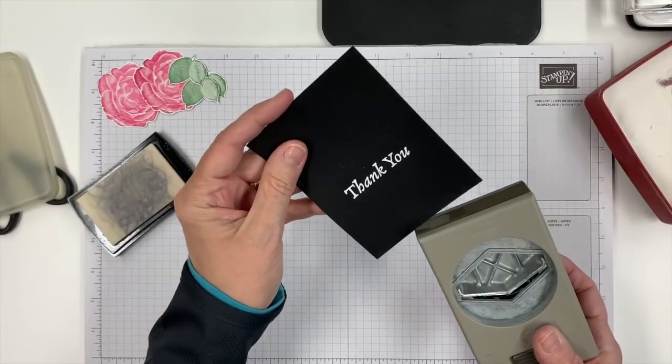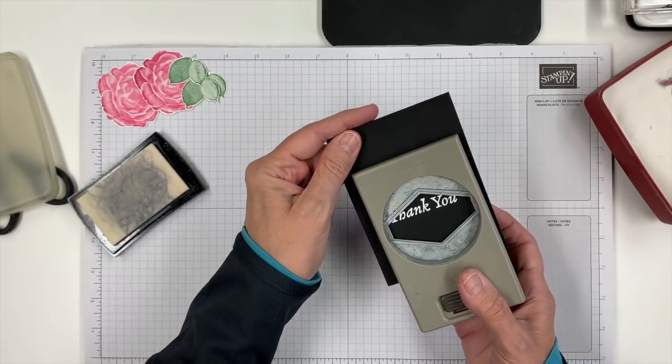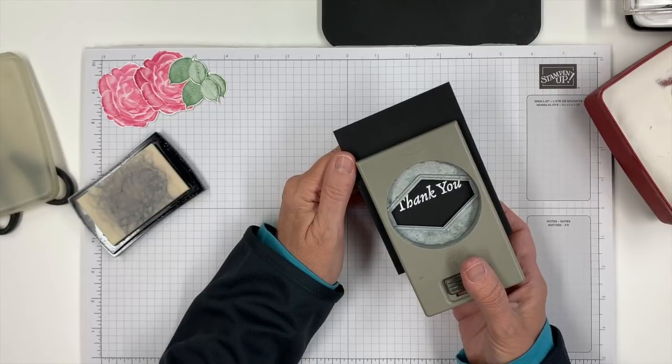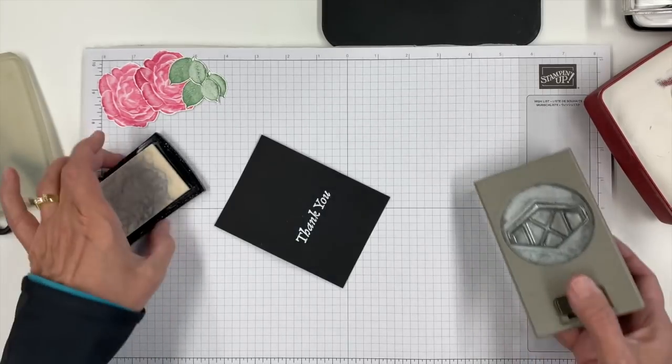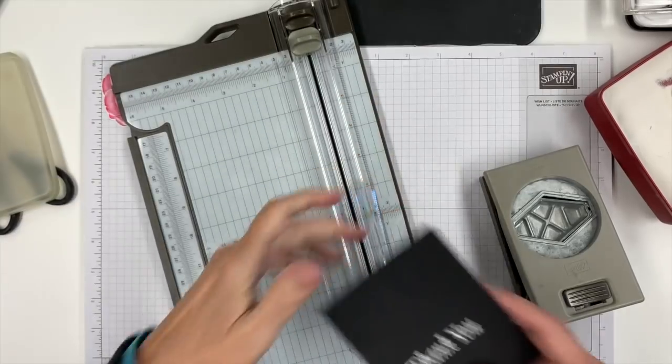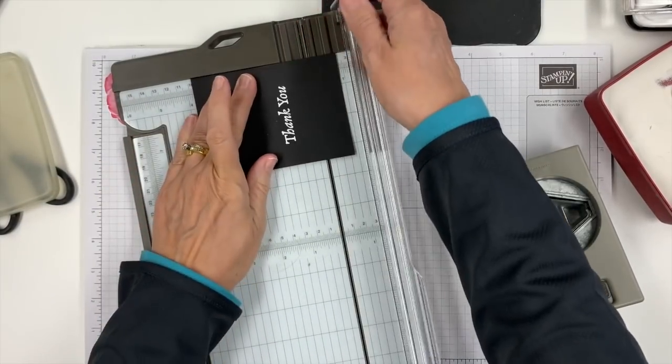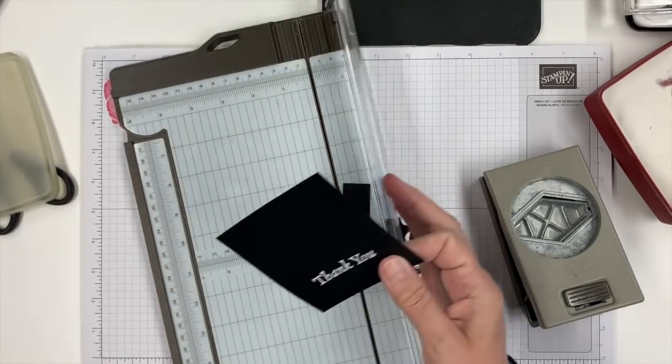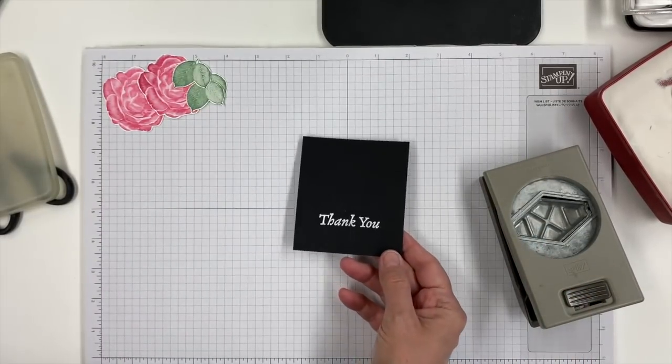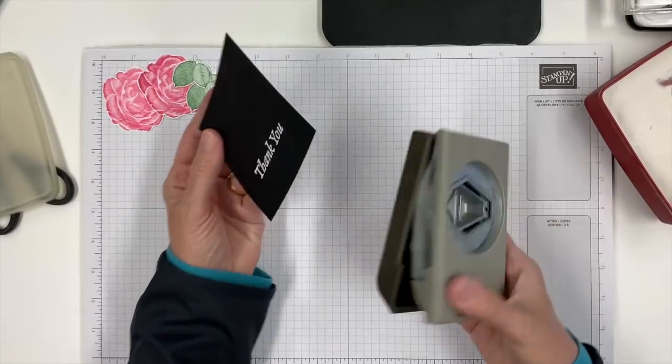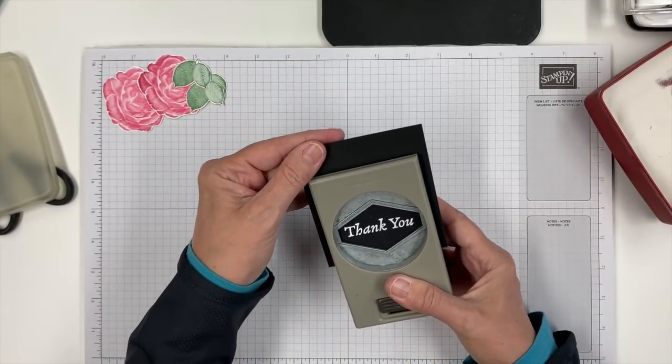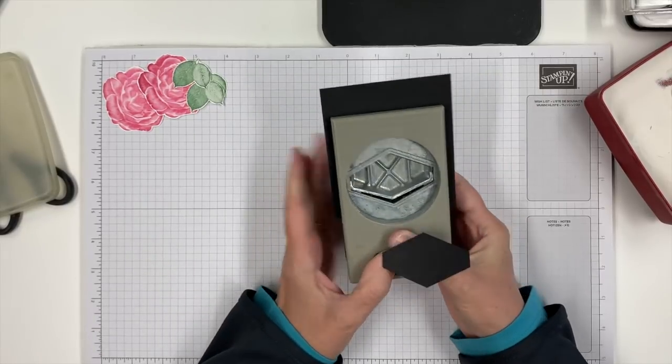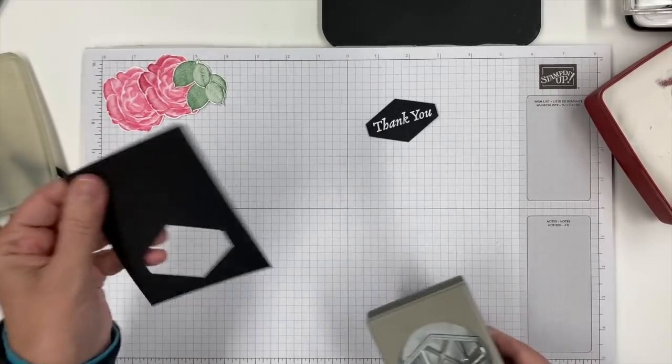Now we're going to use the tailored tag punch. You know what I did? I stamped that up too high so I can't punch it out. We're going to grab our trimmer and cut off some of the bottom of that cardstock so the punch can go in further. Okay, we've punched that out.